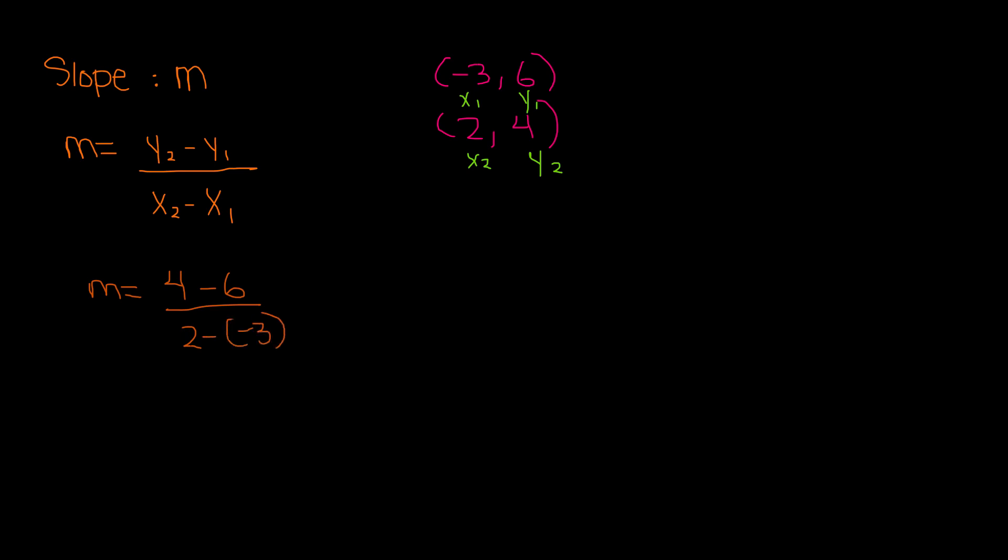So we have m = (4 - 6), which is -2, over (2 - (-3)). These become positive because negative times negative is positive, so 2 + 3 = 5. Therefore, the slope of these coordinates is -2/5 or -2 over 5.